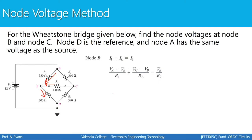Plugging in what we know — VA equals 12 and all resistor values — remembering to use consistent units (kilo-ohms throughout), we get our equation. Notice that we have two unknowns: VB and VC. So we'll simplify this equation, which will become our first equation, and then derive a second equation to relate the two variables. We cannot solve until we have two equations for the two unknowns.